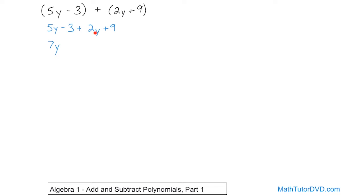Don't forget the variable comes along for the ride — it's like 5 jelly beans and 2 jelly beans, you add them and get 7 jelly beans. Then you look for other like terms. You have a negative 3 and a positive 9 — there's no variable associated with either, so of course you can add them. Negative 3 plus 9: you subtract, 9 minus 3 is 6, and the sign goes with the larger absolute value which is 9, so it's positive. The answer is 7y plus 6. Congratulations, you've added two polynomials. Both are binomials because they each have two terms.